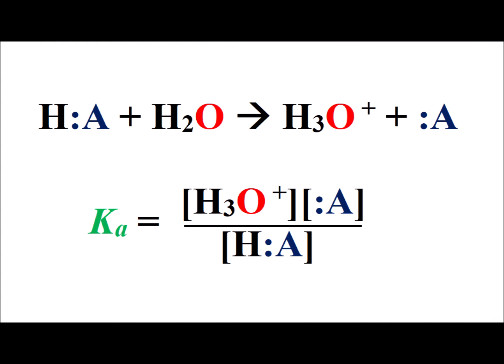to give hydronium ion plus the conjugate base here, which is written as A. For this reaction, the equilibrium constant is the acid dissociation constant KA, the concentration of hydronium times the concentration of the conjugate base divided by the concentration of the undissociated acid.